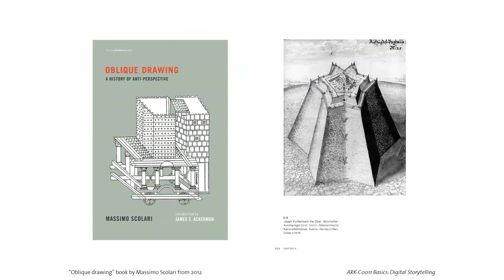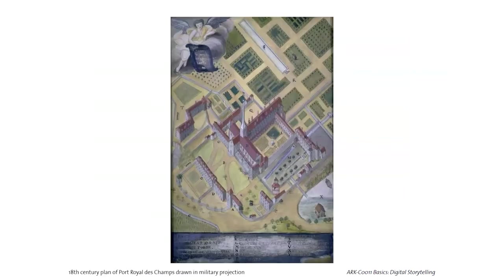This is another good reference for drawing in general: Massimo Scolari's 'Oblique Drawing,' published in 2012. It talks about the history of anti-perspective. We are drawing using an oblique projection — military projection is an oblique drawing. The book shows how oblique drawing and military perspective were used throughout history. This cabinet perspective example is from the East — from Korea — showing these techniques are not really new and have been around for quite some time.